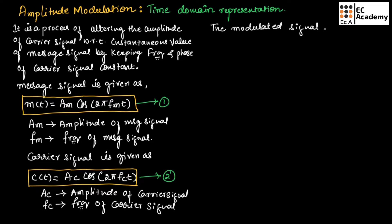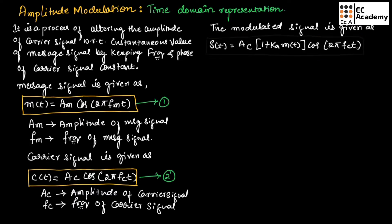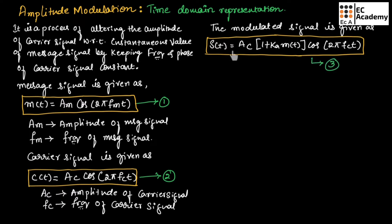The modulated signal is given as s(t) = ac·[1 + ka·m(t)]·cos(2π·fc·t). Let us call this equation number 3. This is the expression for the modulated signal, which consists of both the carrier signal as well as the message signal.